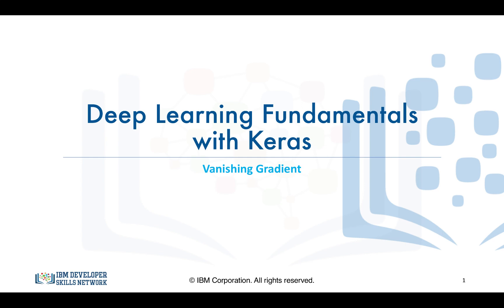In this video, we will discuss a problem with the sigmoid activation function that prevented neural networks from booming sooner. This problem is the vanishing gradient problem.